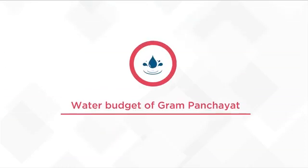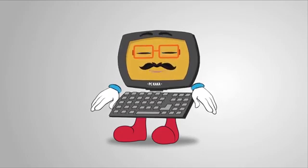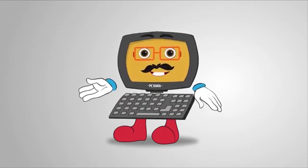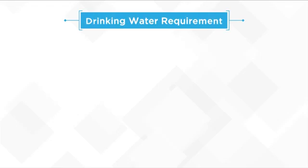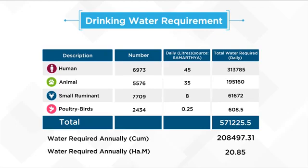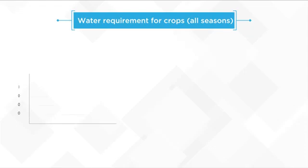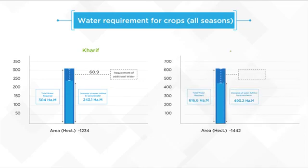Under Mahatma Gandhi NREGA and Mission Water Conservation, the availability of water for drinking and irrigation has to be ensured during planning and implementation of NRM interventions. The drinking water requirement section calculates water needs for humans and livestock, and selection of relevant works for supply of this demand in the INRM plan can be included on priority. Water requirement for crops across all seasons is also assessed, and identification and planning of desired irrigation structures can be decided based on local conditions.